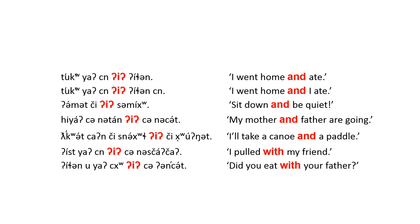My title is my friend. Did you eat with your father? So the conjunction e indicates an accompanying situation or participation. That's the connection between and and with.